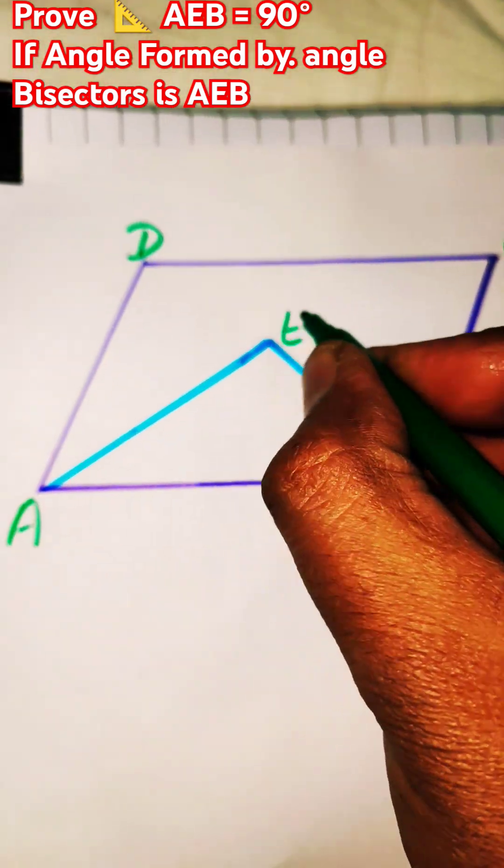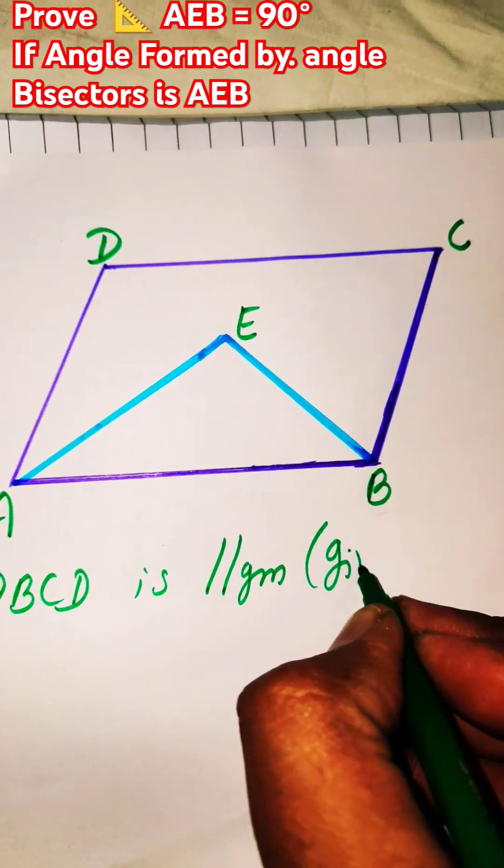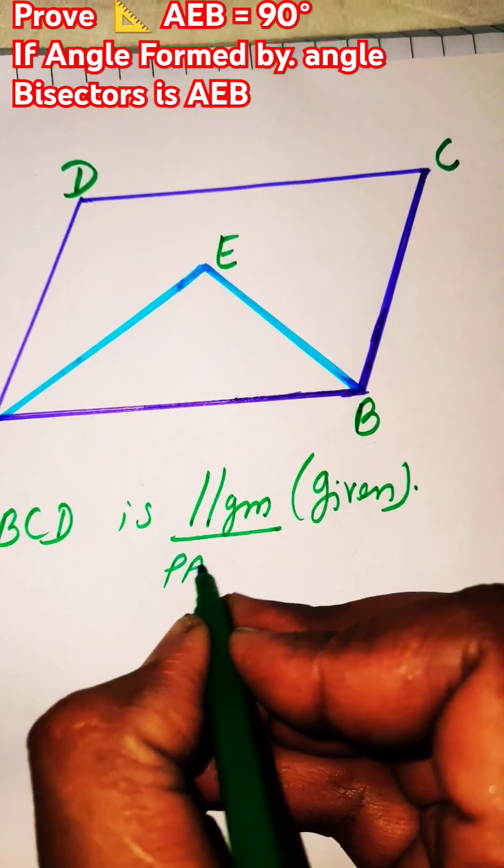Given a parallelogram ABCD, we need to show that the angle bisectors of two adjacent angles intersect at right angles.